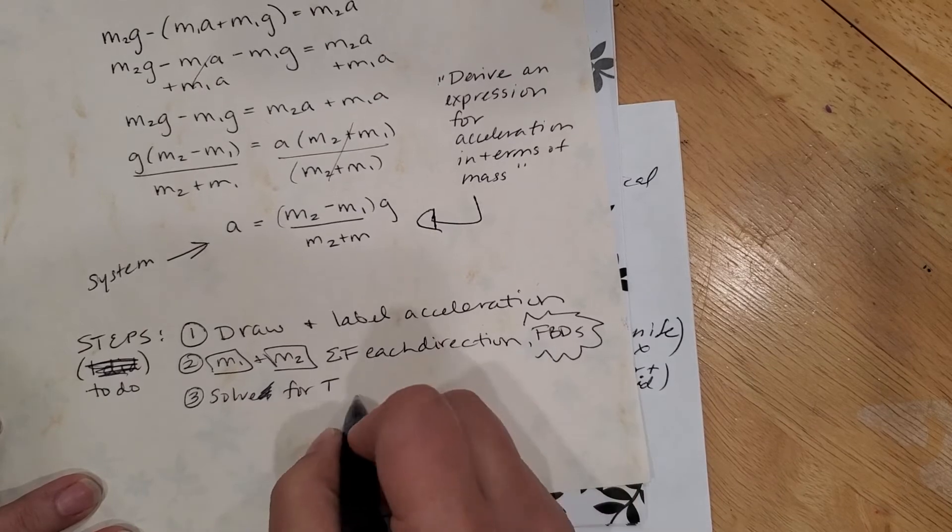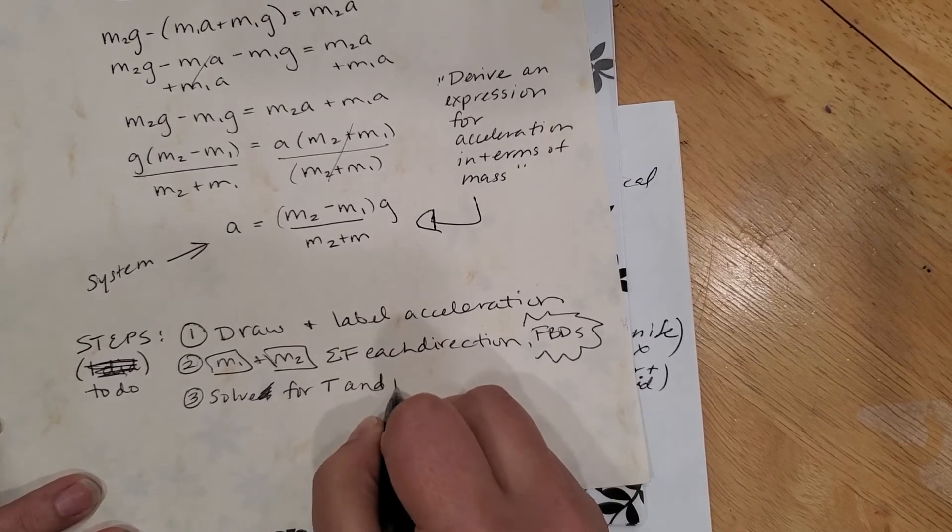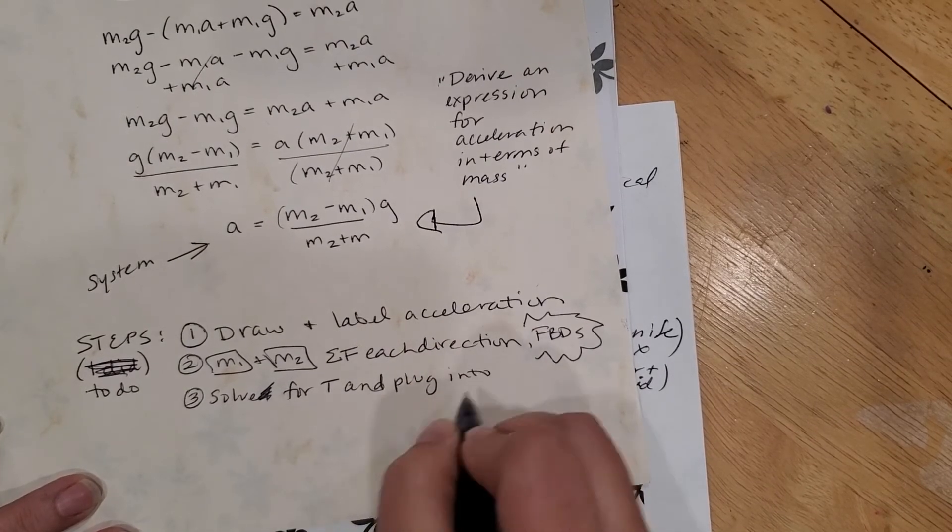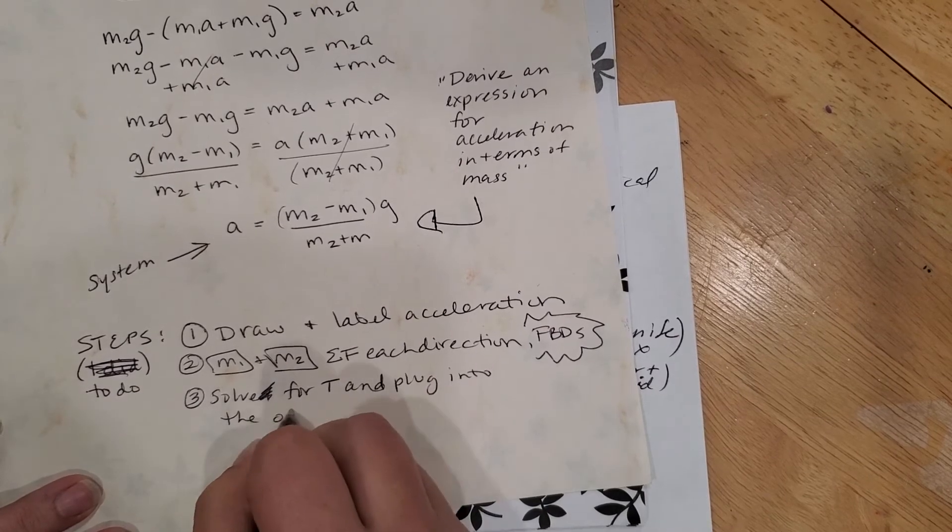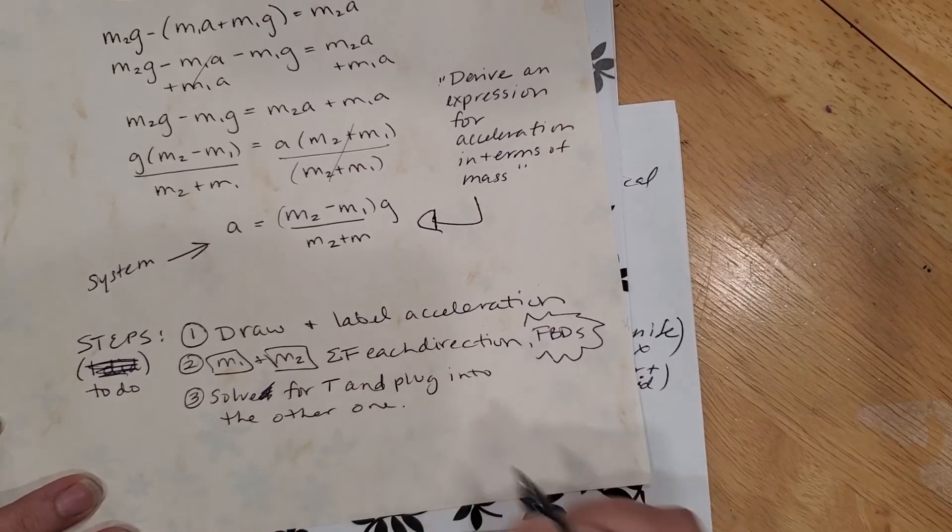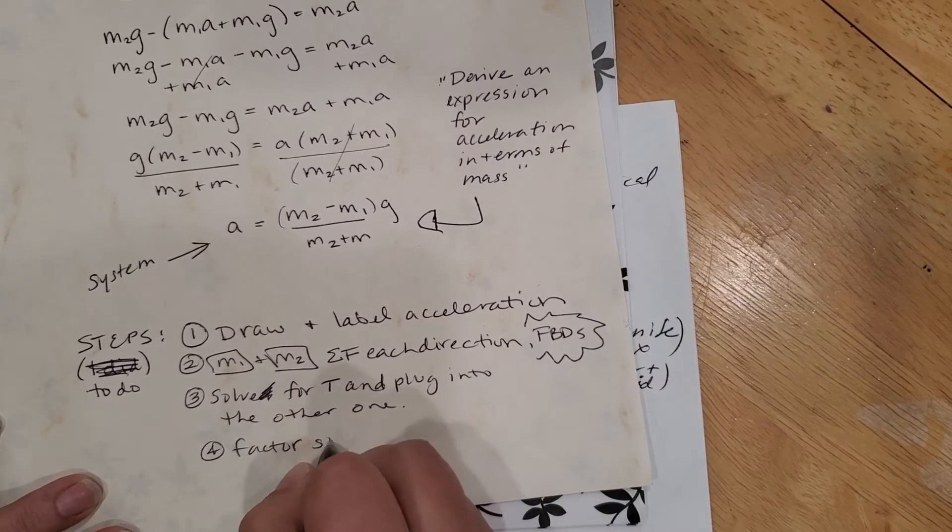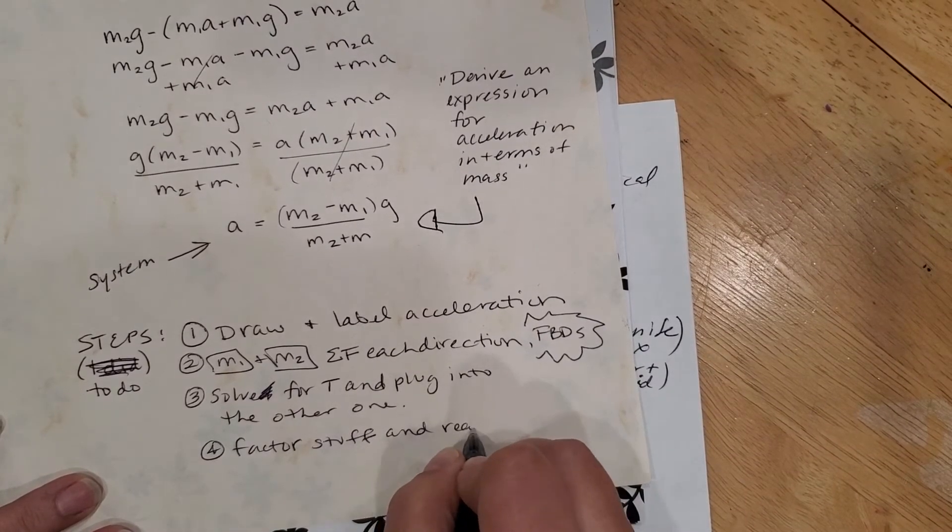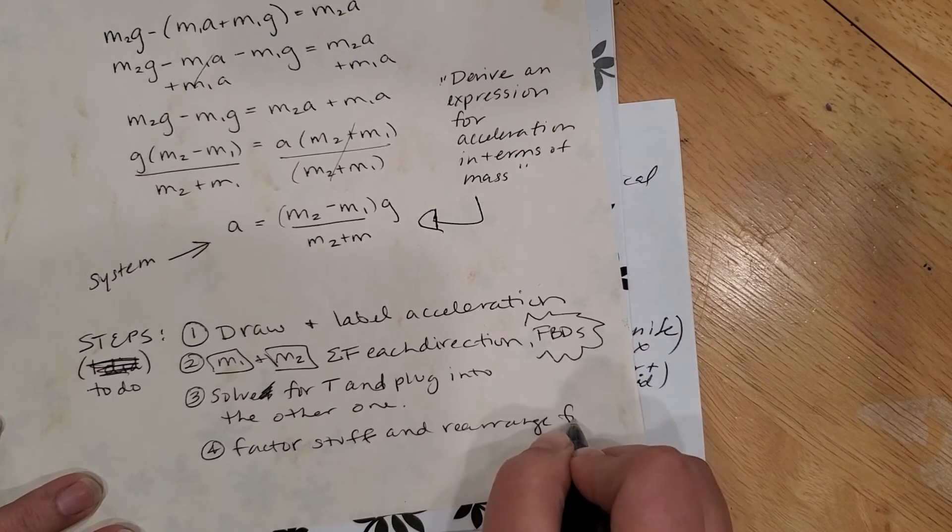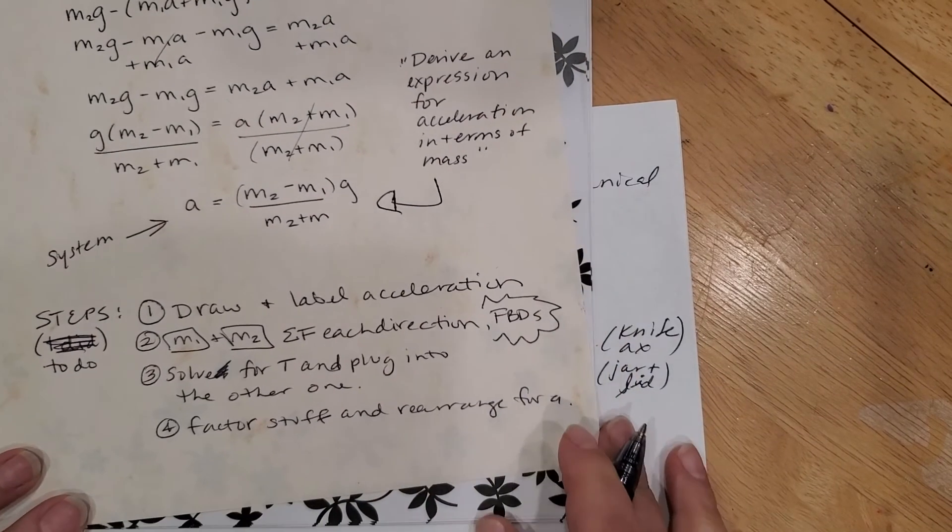Plug into the other one, and then I factored a bunch of stuff, factor stuff and rearrange for a. Okay, that's the to-do list here.